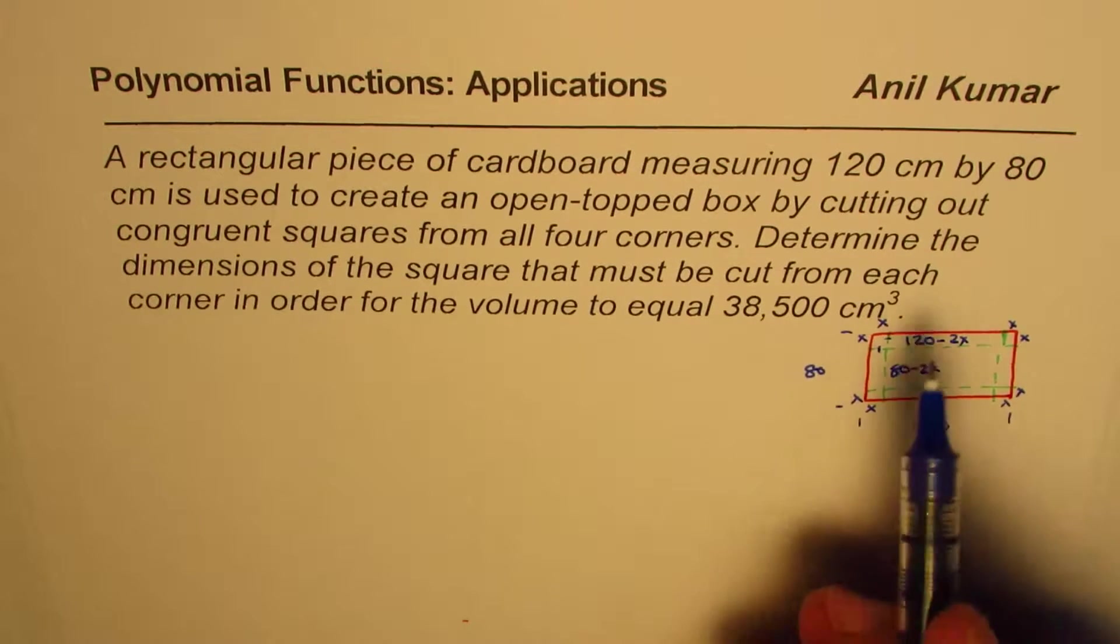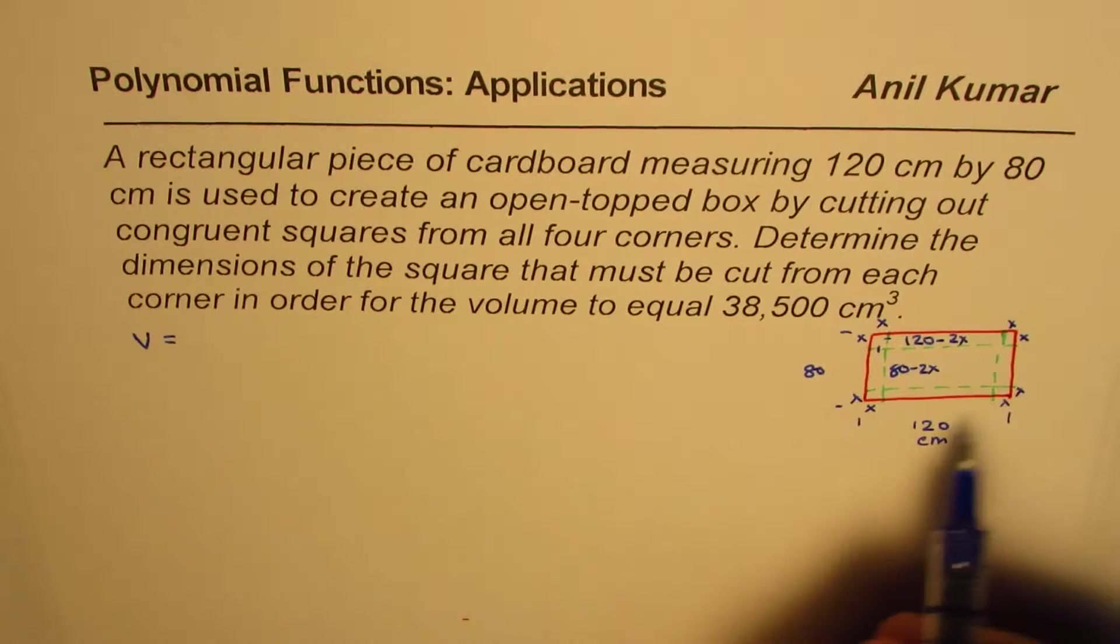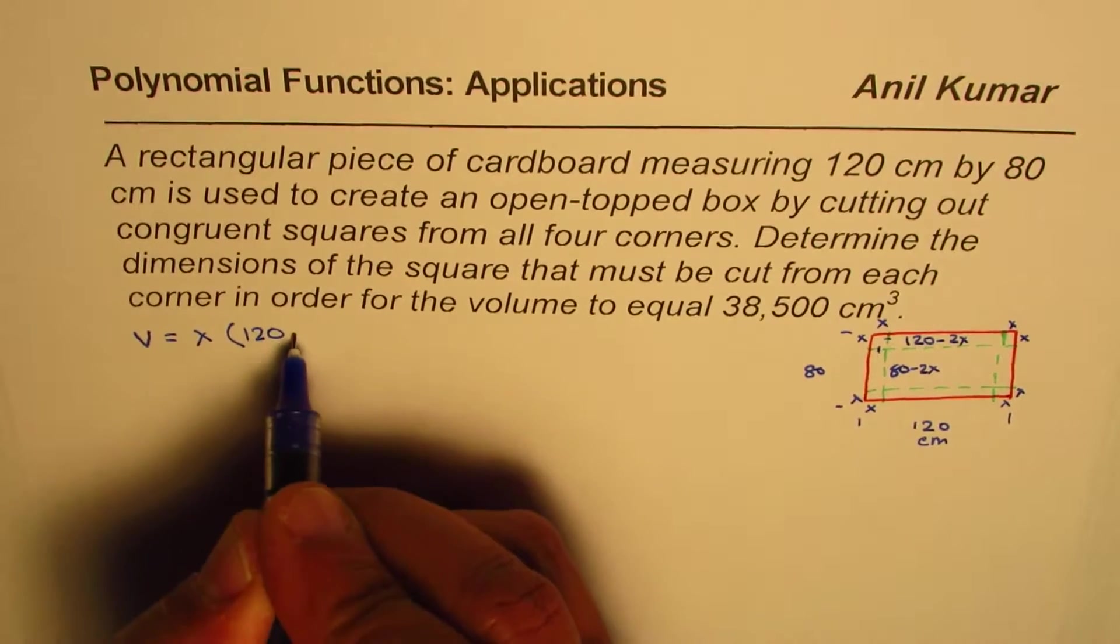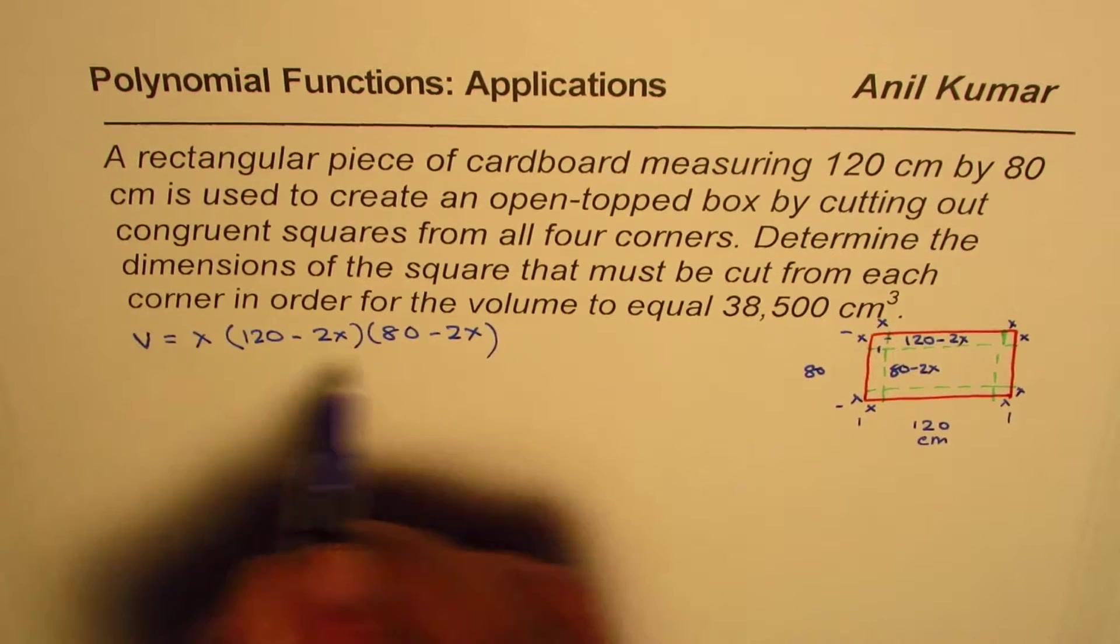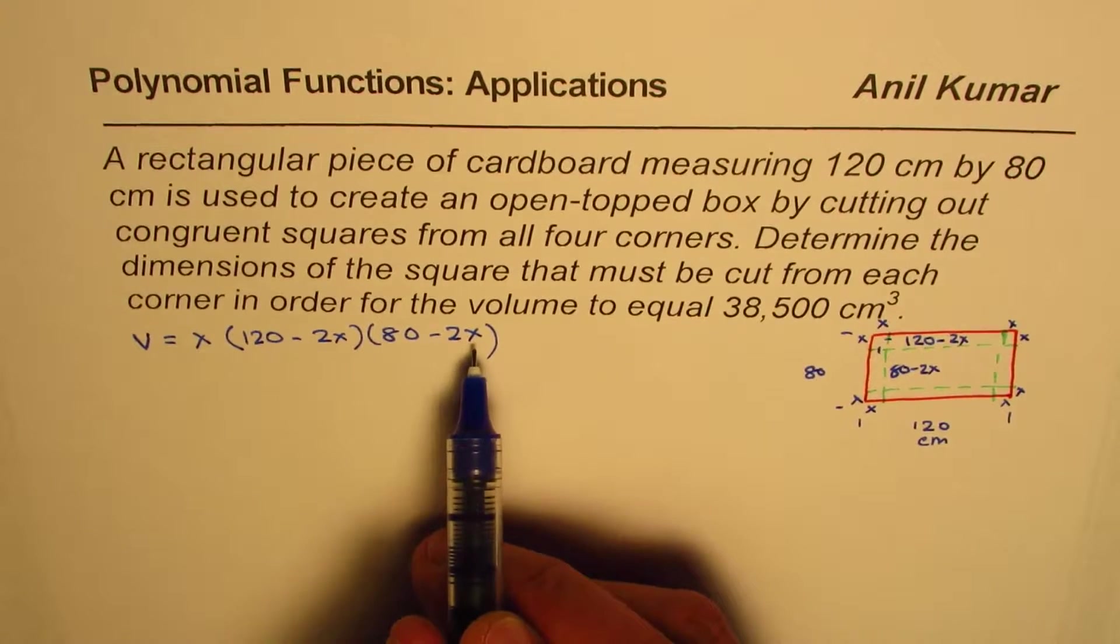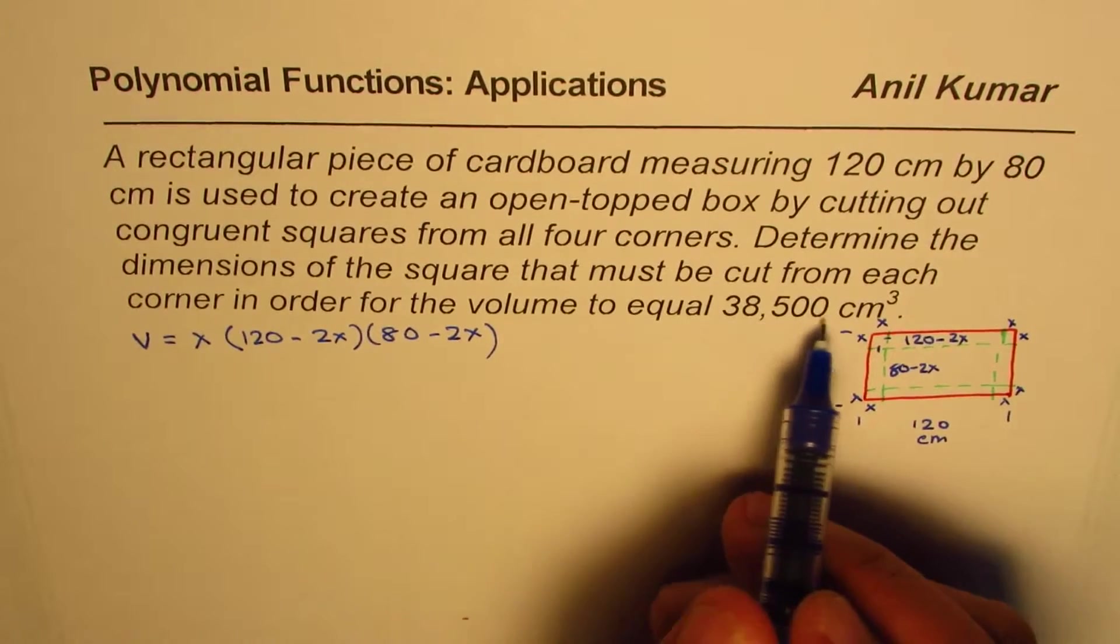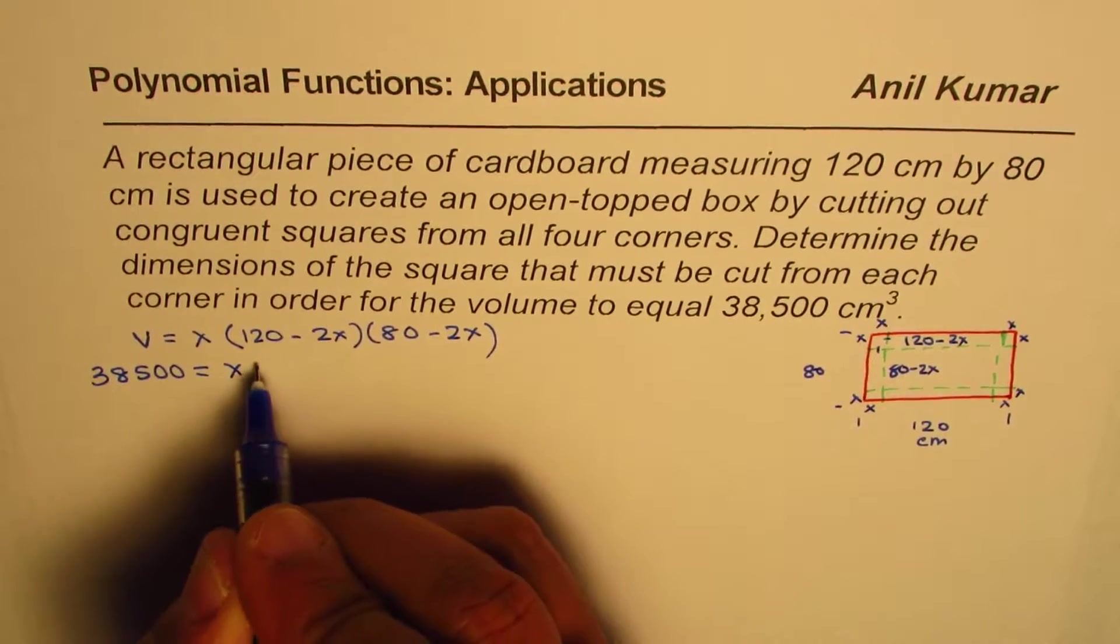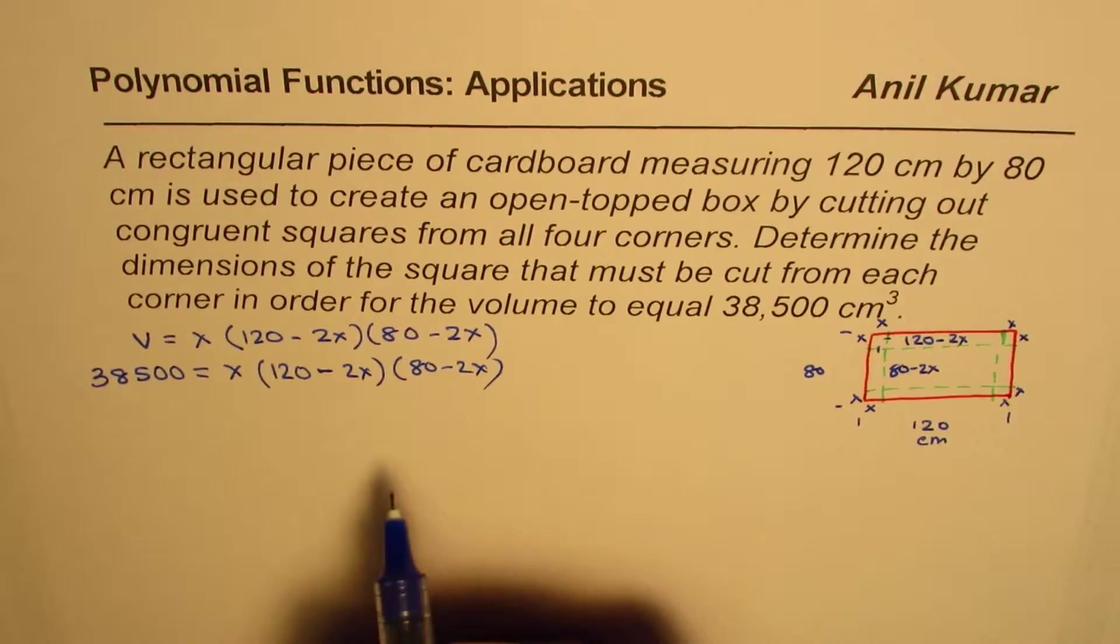Now, volume of this box will be length times width times height. So we can write volume equals X times (120 minus 2X) times (80 minus 2X). Now, we need to find the value of X for which the volume is 38,500. So we'll write 38,500 equals X times (120 minus 2X) times (80 minus 2X).